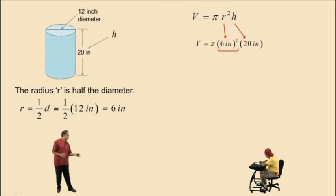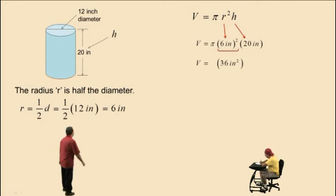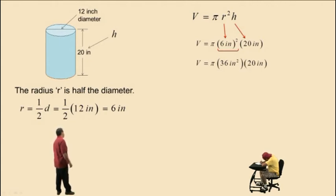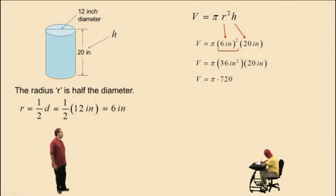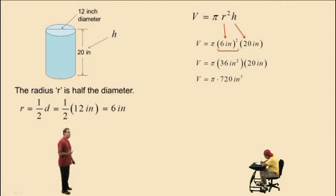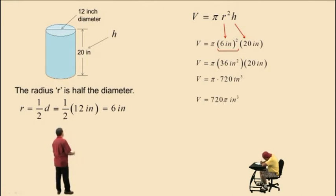6 times 6 is 36, and inches times inches is inches squared, so we get 36 inches squared. Now we have pi times 36 times 20, which is 720. Do not forget about your dimensions — it's inches squared times inches, which gives us inches cubed. That makes sense because we have volume. Our final answer is 720 pi inches cubed.